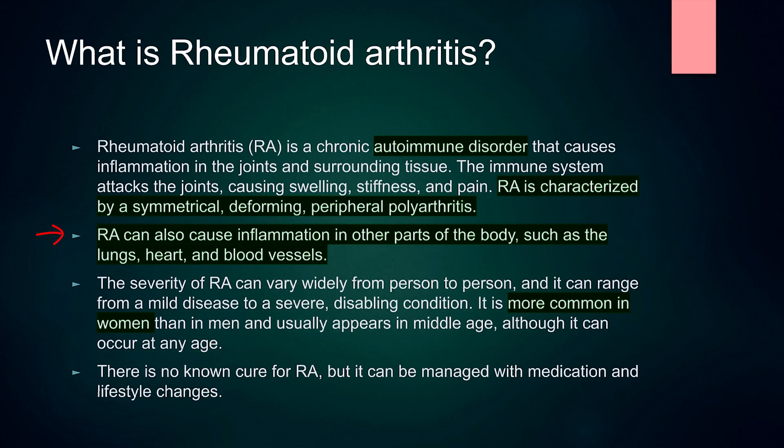Rheumatoid arthritis can also cause inflammation in other parts of the body such as lungs, heart and blood vessels. In the lungs, it may cause nodules, pleuritis, pleural effusion and lung fibrosis — that might be due to the disease process itself or due to methotrexate.